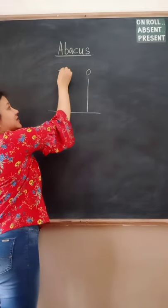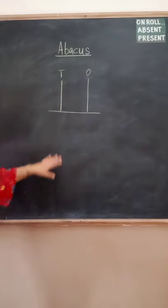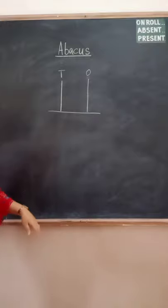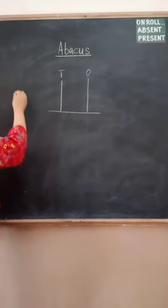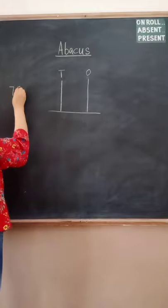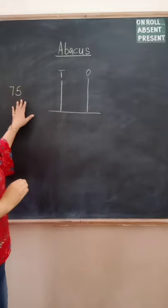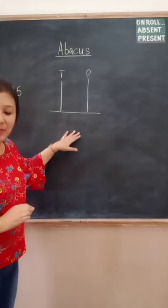That is ones and tens. Now suppose I give you a number and I tell you mark the number on the abacus. I give you a number like seventy-five. And I tell you you have to mark this number on an abacus.